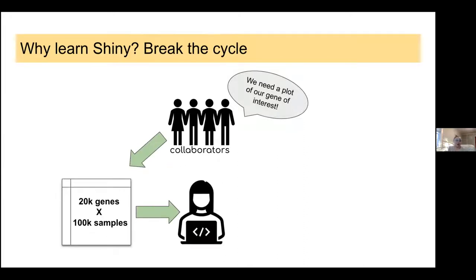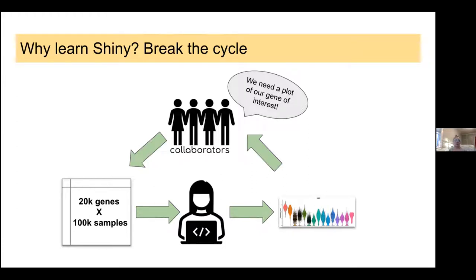For example, my collaborators might have a data set that has 20,000 genes, and those genes are recorded across 10,000 samples. This is too big for them to look at in Excel in a meaningful way. They are really interested in plotting one specific gene of interest, maybe the expression across the samples. So they tell me what gene they want, I get the data set, and then I can make them whatever plot they want for gene X.